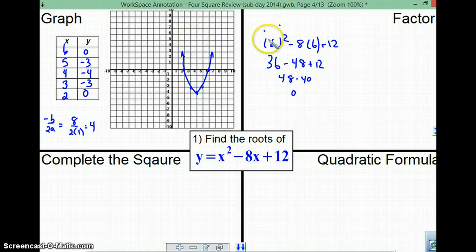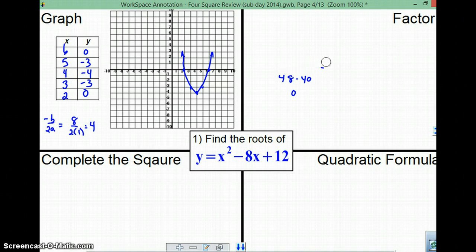Now, stop. Remember, the important part is what are the roots? The roots are the places where the graph crosses the x-axis. We can find it right here and right here. Those roots are 2 and 6.